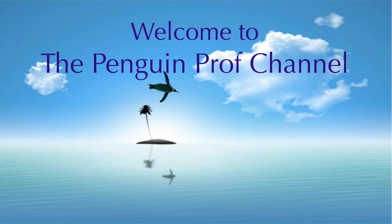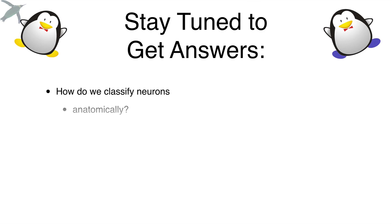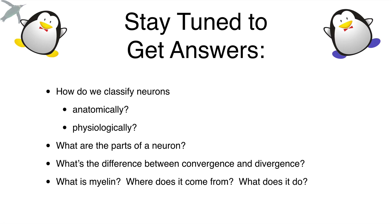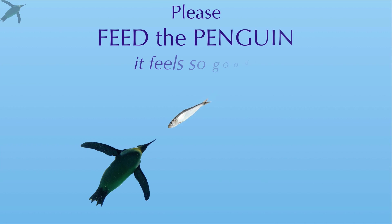Hello and welcome to the Penguin Prof Channel. In today's episode, we're going to get into the neuron — all things neuron. As you jump into the nervous system, you want a good solid foundation. We're going to talk about how we classify neurons, the parts of a neuron, why convergence and divergence are such a big deal in the nervous system, and we're going to talk about myelin and a lot more.